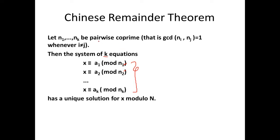The condition here is pairwise co-prime, that is gcd of any n_i and n_j is equal to 1. If we have such a system of k equations, then we can very well find the value of x — x as a unique solution. That is what the theorem says.